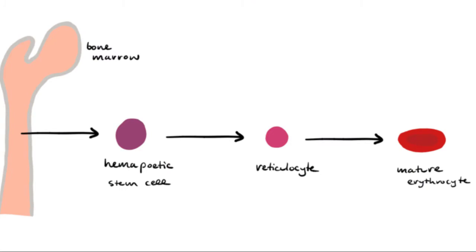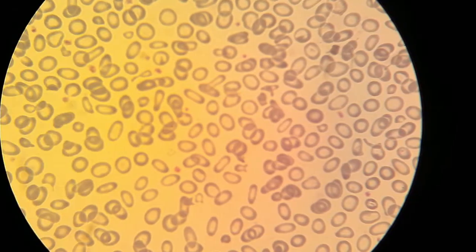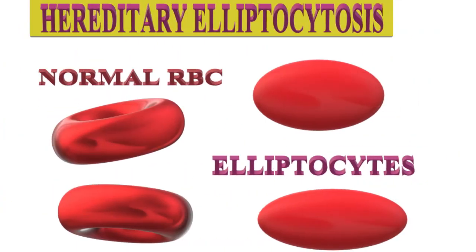Hereditary spherocytosis: abnormal sphere-shaped or ball-like RBCs are produced by bone marrow. The RBC membrane defect makes these RBCs more rigid and hemolysis occurs in a short lifetime. Hereditary elliptocytosis or ovalocytosis: like hereditary spherocytosis, the RBCs are oval or elliptical in shape and are not flexible as normal.